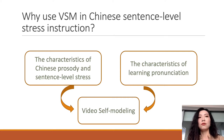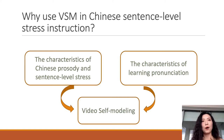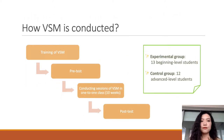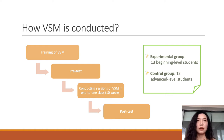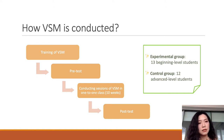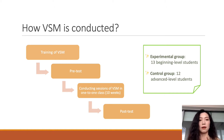After explaining the reason, we now want to explain how video self-modeling is conducted. To implement video self-modeling successfully and effectively, multiple major and minor processes are necessary. The whole procedure includes training of video self-modeling, a pre-test phase, conducting sessions of video self-modeling in one-to-one class, and post-tests.